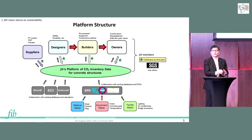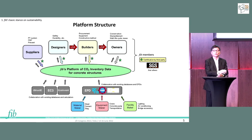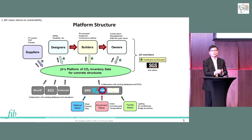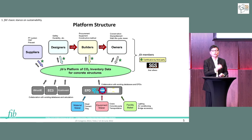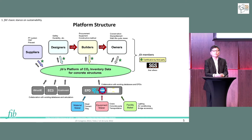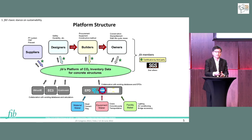At the same time, FIB decided to form a platform to collect inventory data and design process data from the material stage to end of life. Another sector is working to reduce CO2 in the material stage, but after construction — especially the relationship between durability and CO2 emission — we don't have much data. So it is very important for Commission 8, the durability group, and owners to gather data on how to maintain structures during their lifetime. We will form this platform in the future.